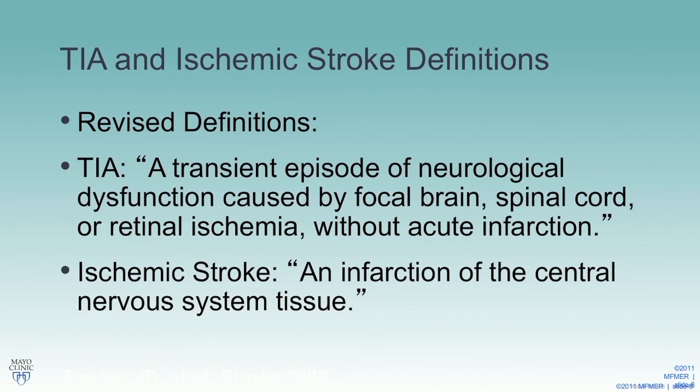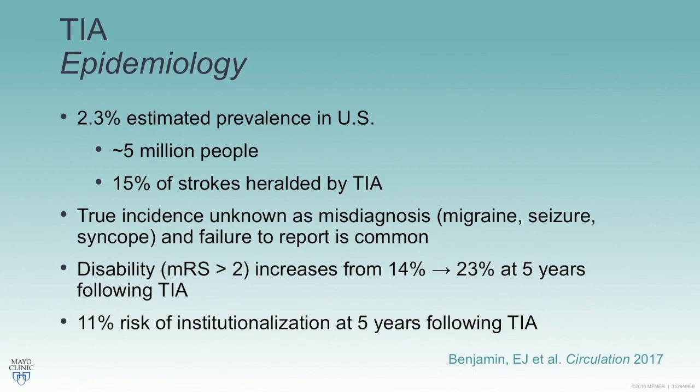The definitions proposed as operational were: a TIA is a transient episode of neurological dysfunction caused by focal brain, spinal cord, or retinal ischemia without acute infarction; and ischemic stroke is an infarction of the central nervous system tissue. The epidemiology and prevalence is very similar to stroke — about 2.3% is the estimated prevalence of TIA.